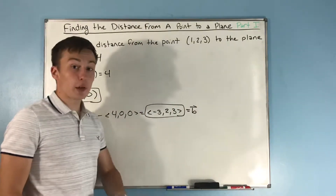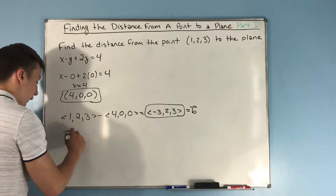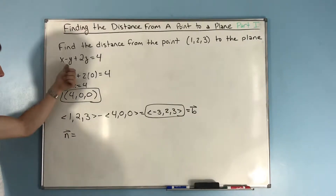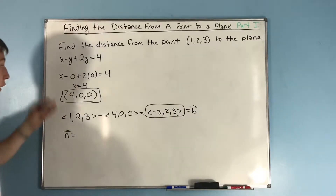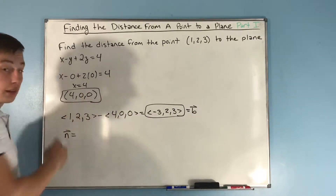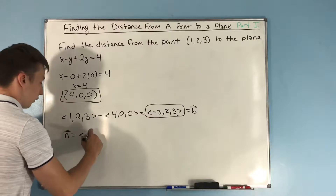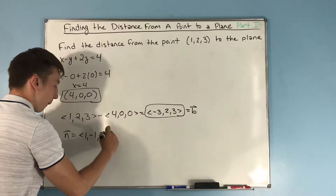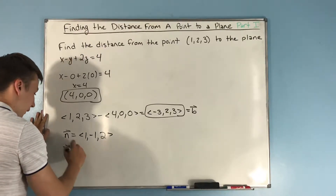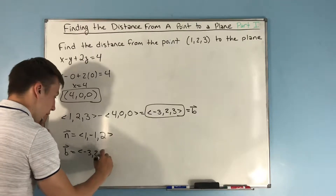We have our vector b, but we also need to find our normal vector for this plane. Our normal vector is just going to be (1, -1, 2) — it's the coefficients on x, y, and z for our plane when it's in the linear equation. So our normal vector is (1, -1, 2). I'm going to write the b vector over here: (-3, 2, 3).